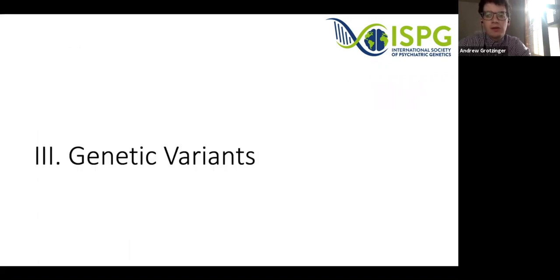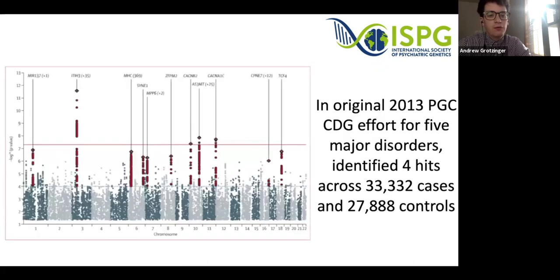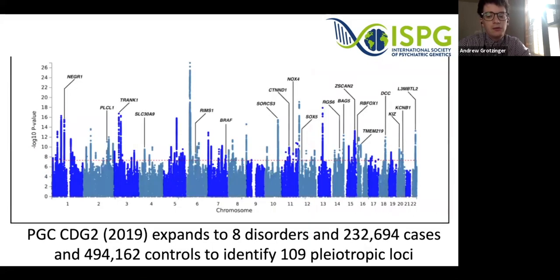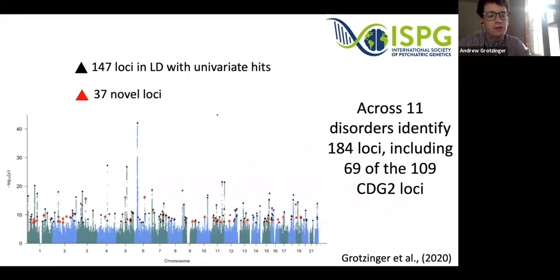I want to talk now about genetic variant level analyses with respect to GWAS and cross-disorder efforts. Starting with the first cross-disorder paper in 2013, which examined five major disorders across over 33,000 cases and 27,000 controls to identify four hits. This expanded rapidly in the 2019 Cell paper to eight disorders, over 230,000 cases and almost half a million controls, identifying over 109 pleiotropic loci. Using fixed effects meta-analysis in genomic SEM across 11 disorders, we identified 184 pleiotropic loci, including 69 of the 109 CDG2 loci, pointing to replicability of those findings.